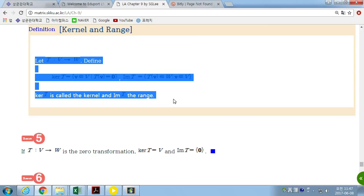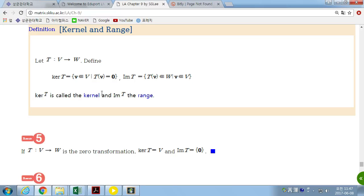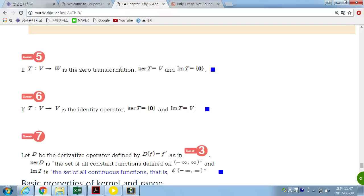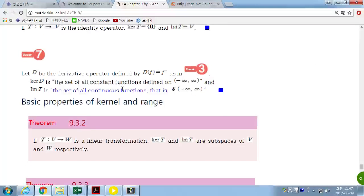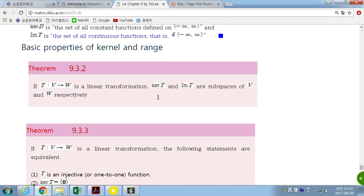Kernel and range, we have defined it. It's the same. So, kernel is a set of vectors in V whose images are zero vectors. And that forms subspaces. Kernel and images are also subspaces of V and W respectively.